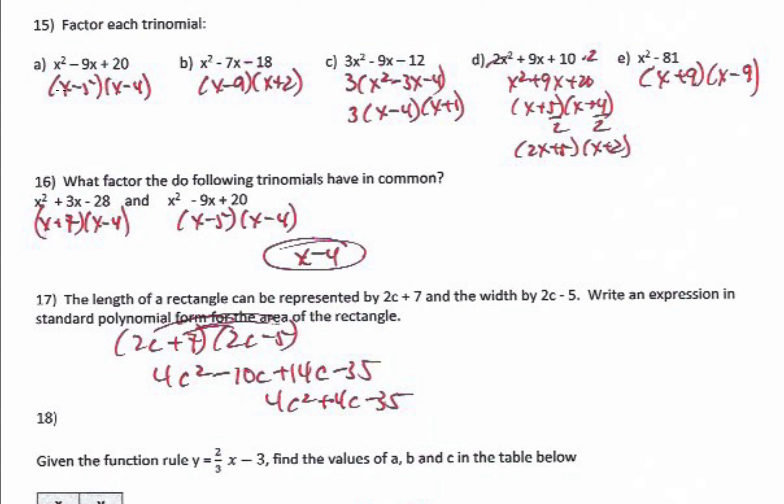To factor each trinomial, you have two options. One is the AM technique: multiply out to the last term and add up to the middle. In this one, multiply out to positive 20 and add up to negative 9. Or use the calculator with Y1 equals the last term divided by x, and Y2 equals Y1 plus x, then look for negative 9 in the last column. Either way you get negative 5 and negative 4, making the factors (x minus 5) and (x minus 4).